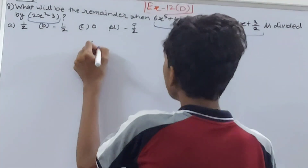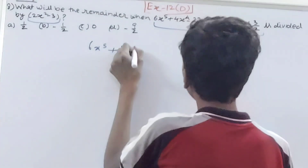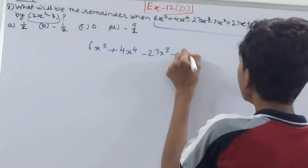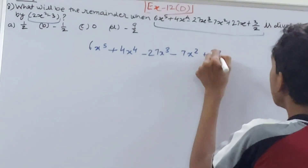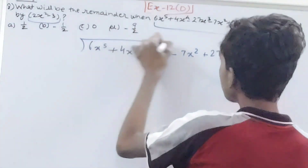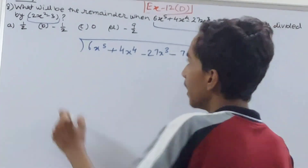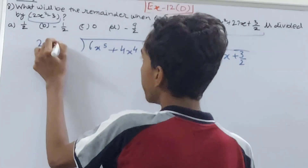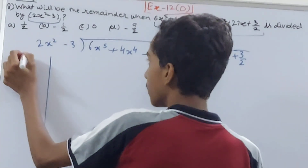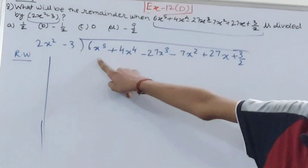Here we have 6x to the power 5 plus 4x to the power 4 minus 27x cubed minus 7x squared plus 27x plus 3/2. We have to divide this by 2x squared minus 3. Here will be my rough work column as well. Now, first term of the dividend divided by first term of the divisor.